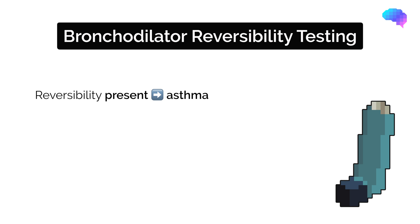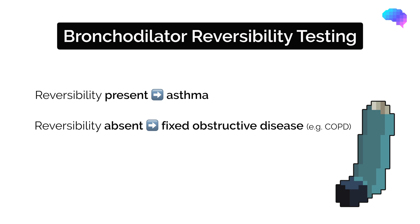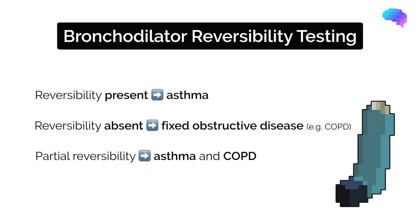If bronchodilator reversibility is absent, this suggests a fixed obstructive respiratory disease such as COPD. If partial bronchodilator reversibility is present — i.e. not enough to qualify as a positive result as previously described — this may suggest a dual diagnosis of both asthma and some degree of fixed obstructive respiratory disease, for example COPD.